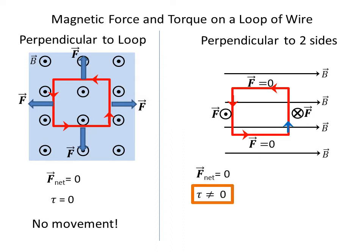The F net is still zero, but the torque is not zero. So this square loop will start to spin.